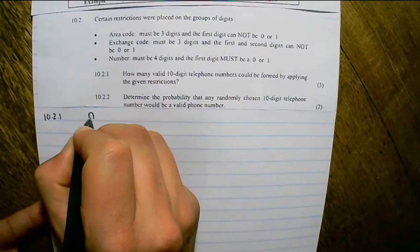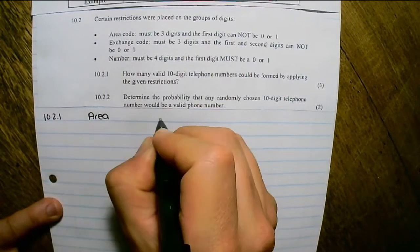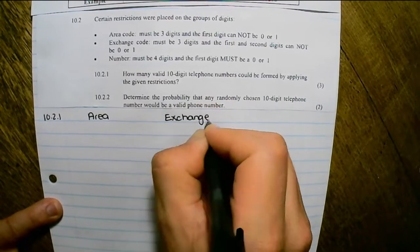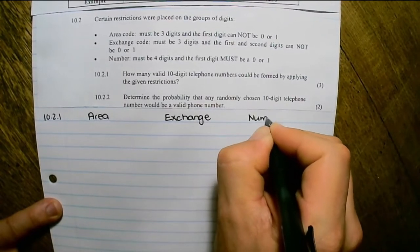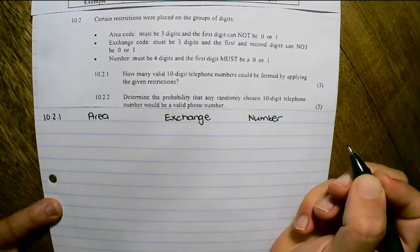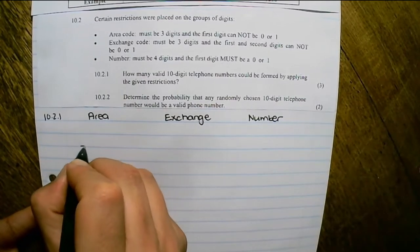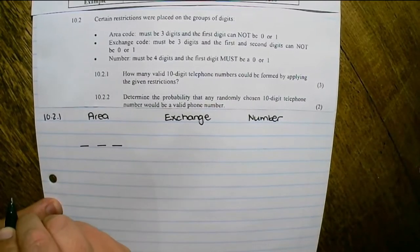Let us deal with each restriction separately. We have the area code, the exchange code, and the number.